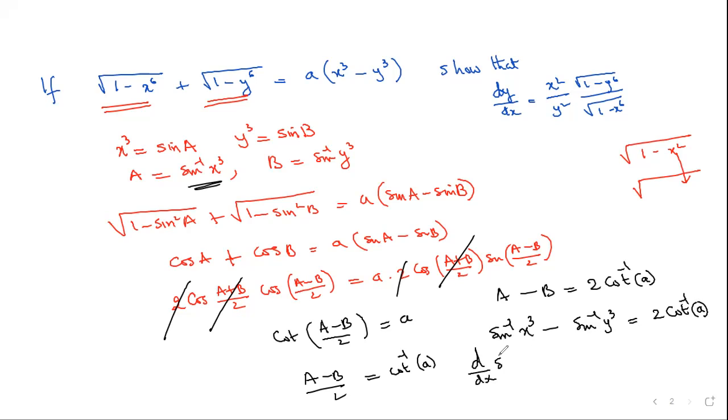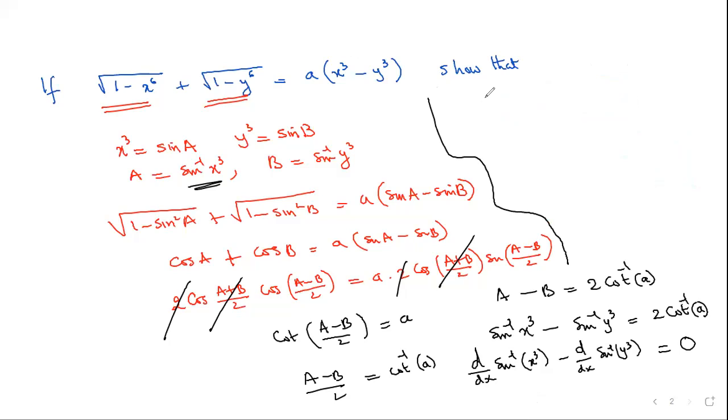So d/dx of sin⁻¹(x³) minus d/dx of sin⁻¹(y³) equal to right hand side 0. Now just differentiate and make d/dx subject, you'll come to this answer. So 1 upon root(1 - (x³)²) into derivative of x³. Any problem, Ardik? No sir. I don't have space to write there so I'll write in some of this.